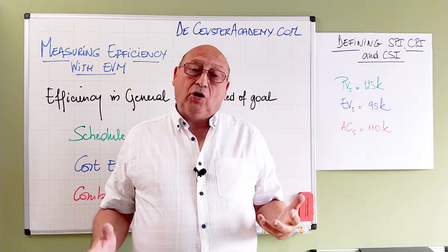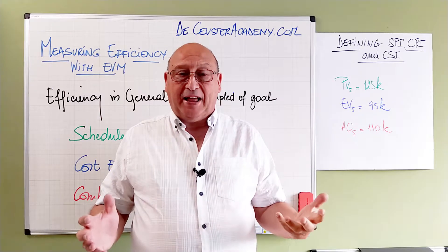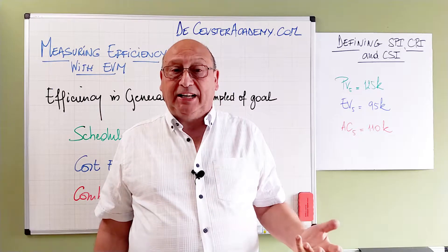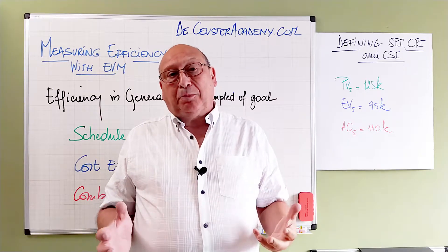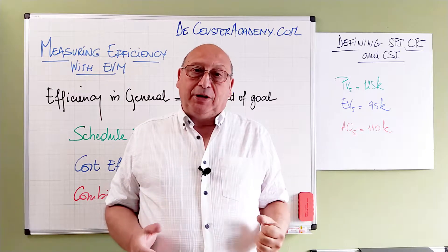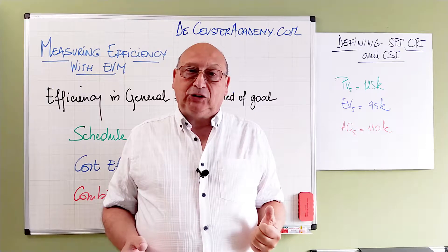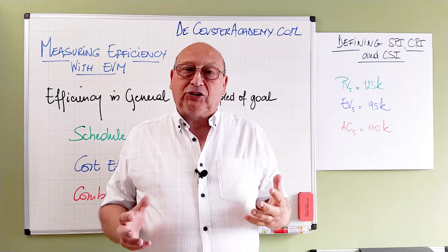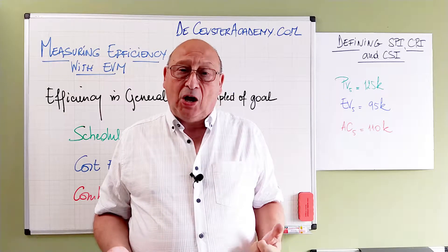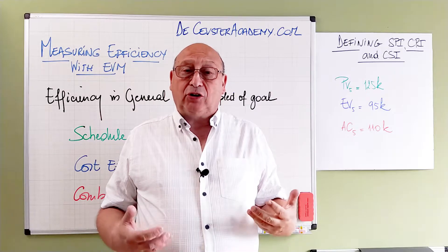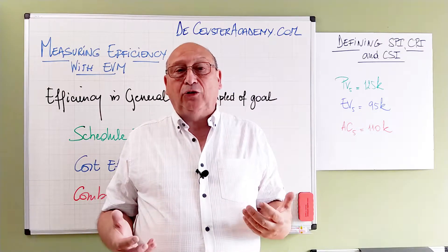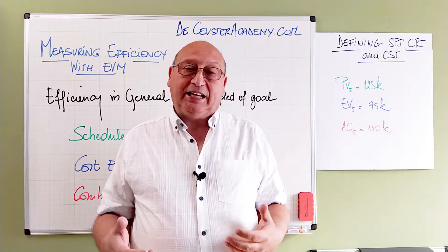When I described the earned value parameters — planned value, earned value, and actual cost — in the previous presentations related to earned value management, we explained what they are about and what they are showing to us. We defined the schedule variance and the cost variance, which gave us the possibility to identify how the project is going schedule-wise and cost-wise.